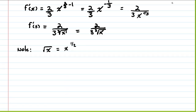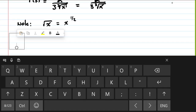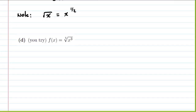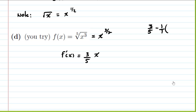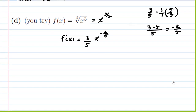For the fifth root of x cubed: rewrite as x to the 3/5. Then f prime of x is (3/5) times x to the 3/5 minus 1. Getting a common denominator: 3 minus 5 over 5 gives negative 2/5. So the derivative is (3/5) x to the negative 2/5. Webassign will accept this form, or equivalently 3 divided by 5 times the fifth root of x squared.